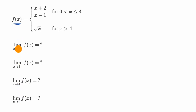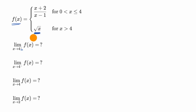Let's start with this first one: the limit as x approaches four from values larger than four — that's what that plus tells us. When x is greater than four, our f of x is equal to the square root of x. So as we are approaching four from the right, we are really thinking about this part of the function.